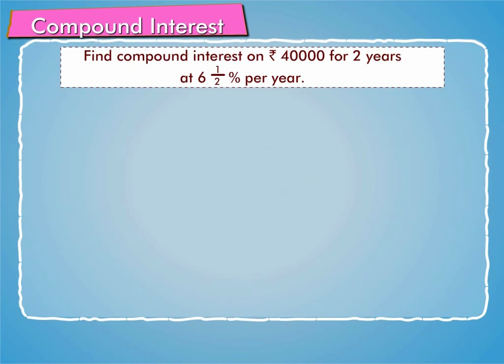Now we want to find compound interest on rupees 40,000 for two years at six and a half percent per year. By using the formula, amount is equal to P into 1 plus R raised to power n.